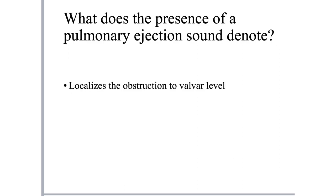When you have a right ventricular outflow tract obstruction and cannot clinically determine where the obstruction lies, hearing an ejection sound localizes it to the valvular level - not infundibular, not supravalvar, but valvar. This holds true on the left side as well: when you suspect a left ventricular outflow tract obstruction and hear an aortic ejection click, the level of obstruction is valvular.